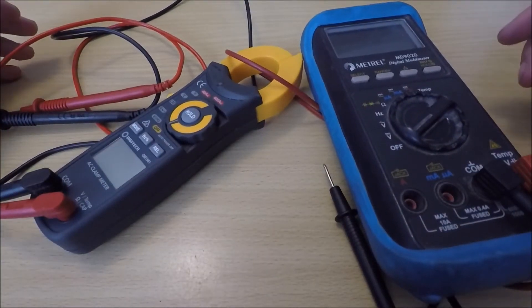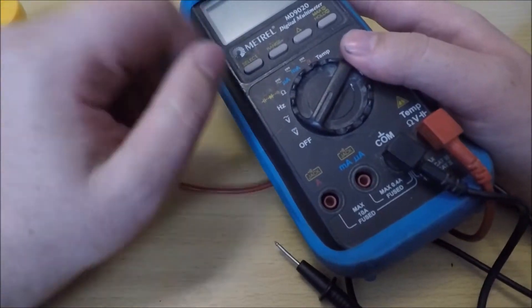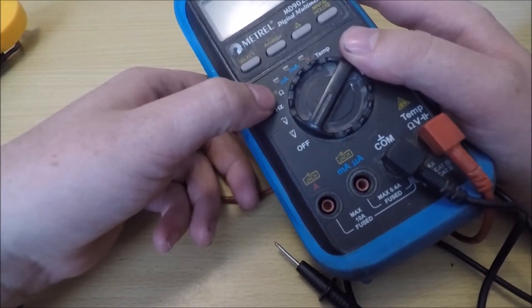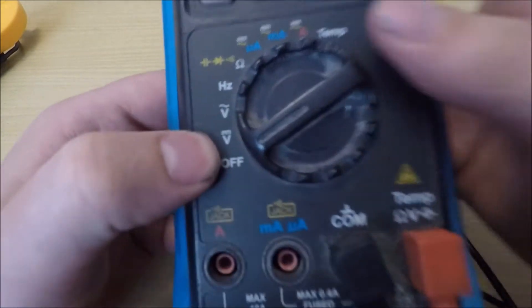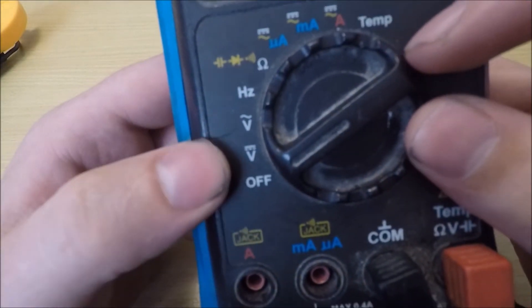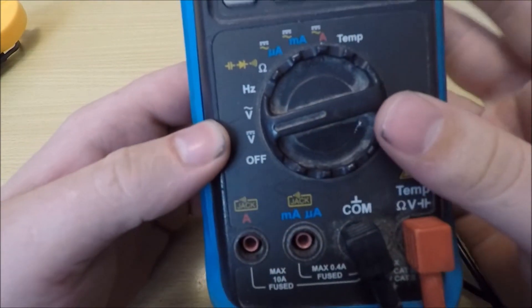I'm going to quickly take you through the basics of using a multimeter. I'll go through voltage, continuity, resistance, and current. If you can see the symbol here, a V with a line and a dotted line on top, that's volts DC.